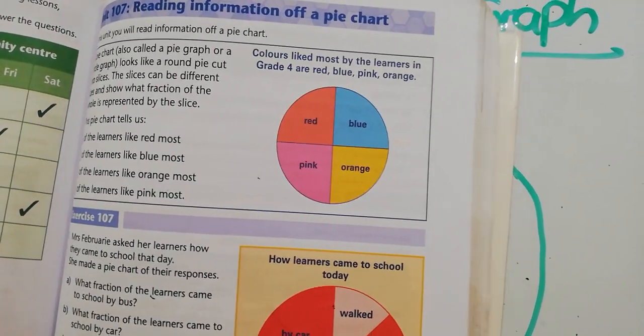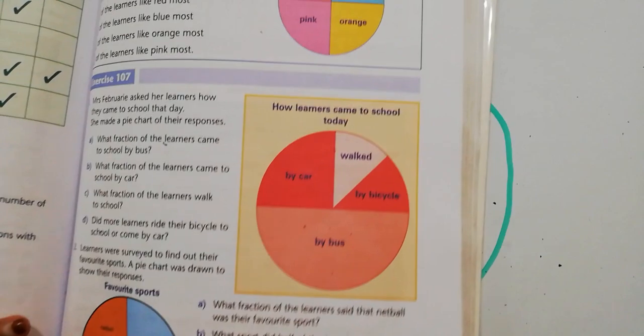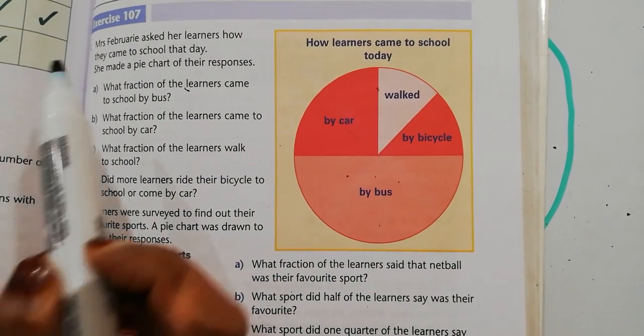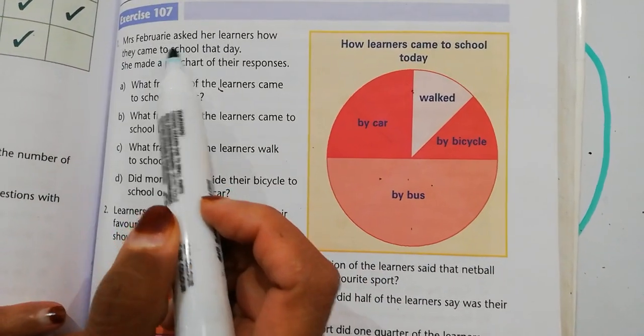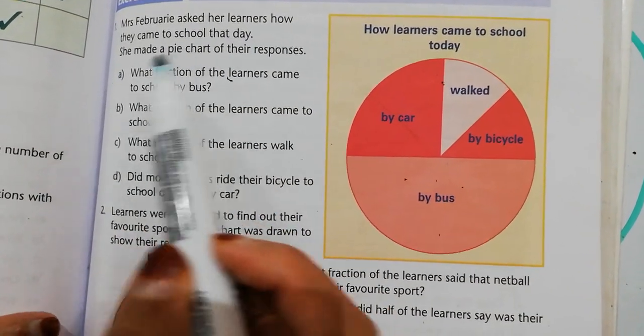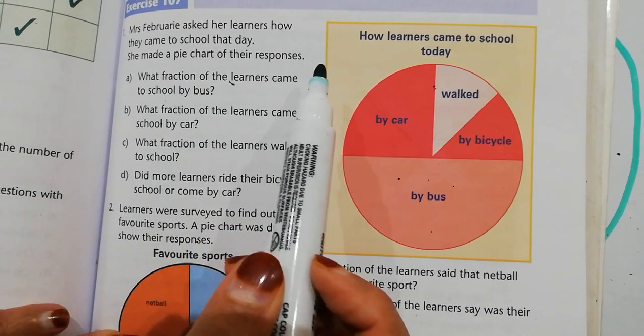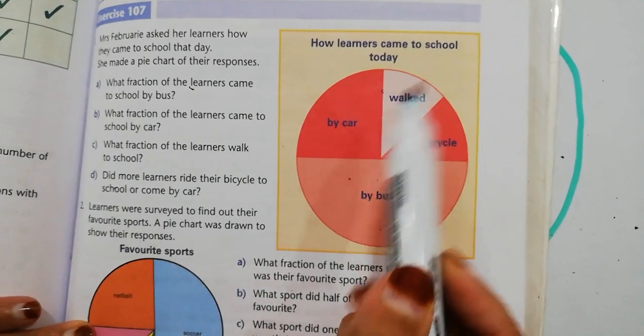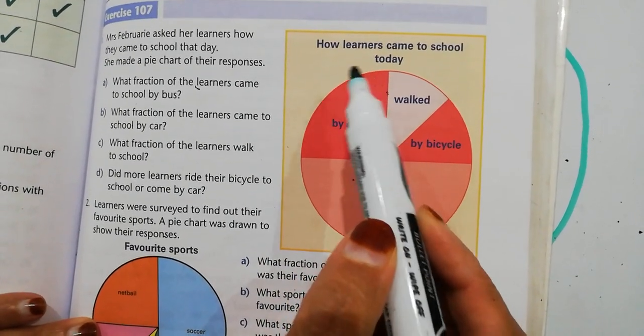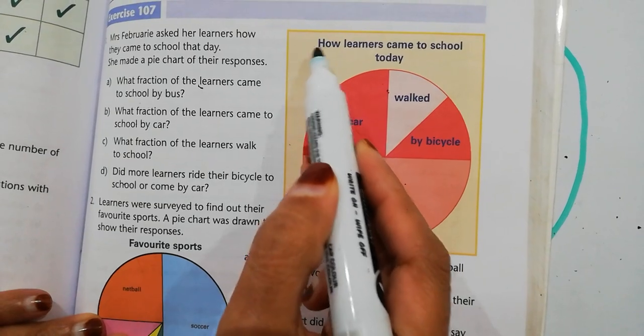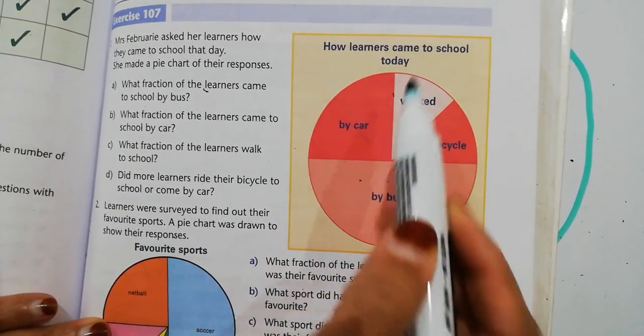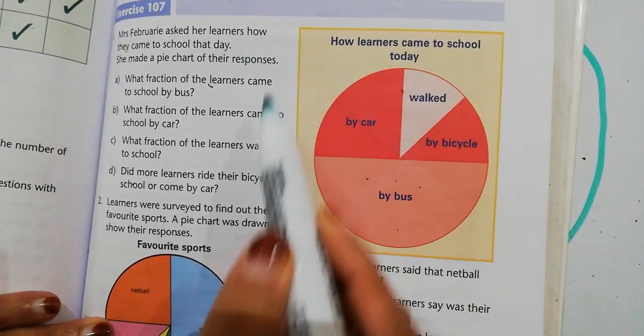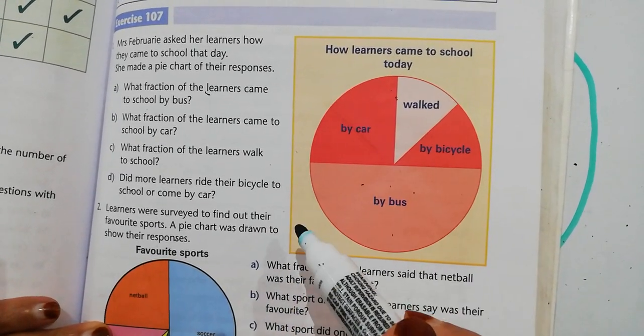Now, when we're looking at this information, it's basically about us being able to analyze the pie graph. Let's look at this one here. Mrs. February asked her learners how they came to school that day. She made a pie chart of their responses. Now look here. A graph always has a heading. Many of you learners who send me your bar graphs, many of you forgot to put a heading. Every graph has a heading. At a glance, I must be able to say, this is what the graph is about.